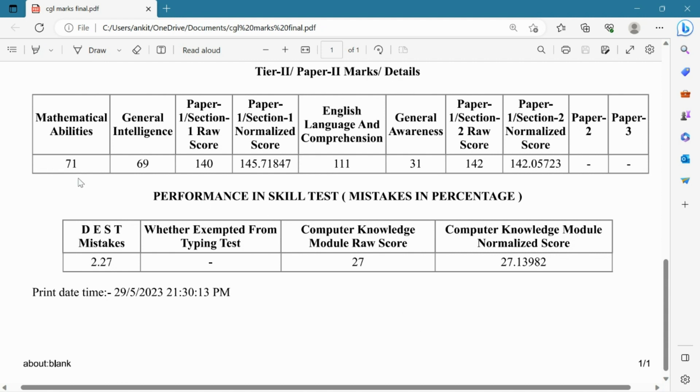Here's my scorecard. In maths I've got 71 marks out of 90, and in reasoning I've got 69 out of 90. So in section 1, the raw score is 140 out of 180, and when we normalize it we get 145.7. This is the normalization I have got here.